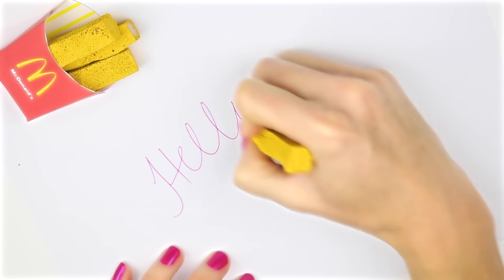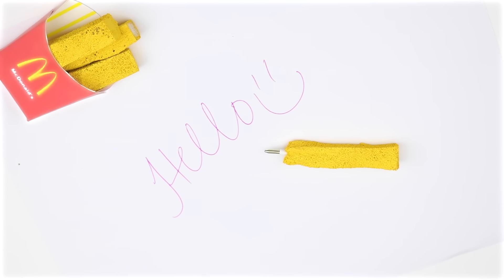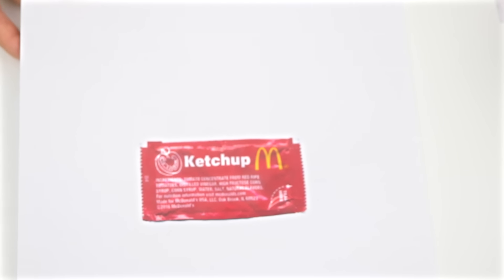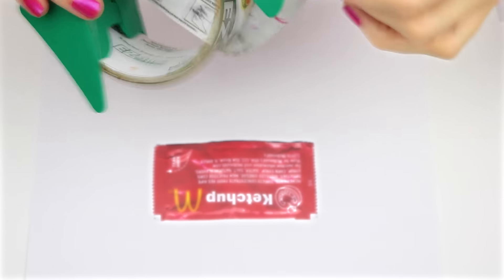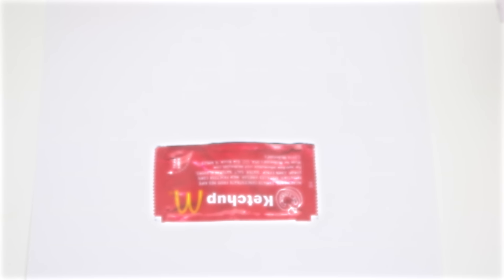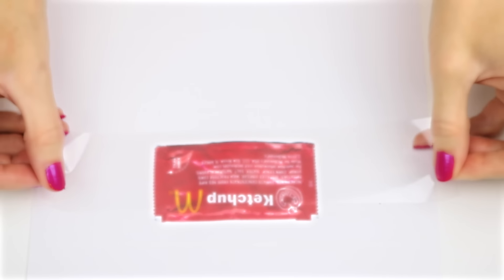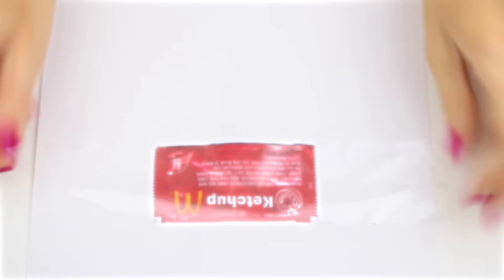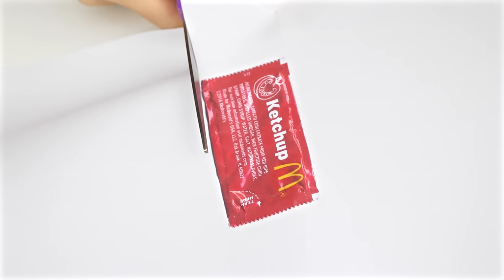The next DIY will be a mini ketchup notebook with a fake ketchup spill. Using the link down below, print out the ketchup packet printable. Place a piece of clear packaging tape over the top to give it the glossy look.